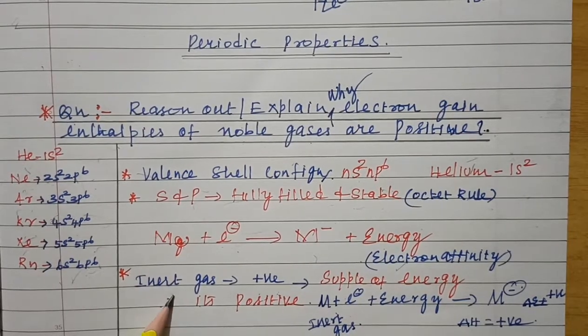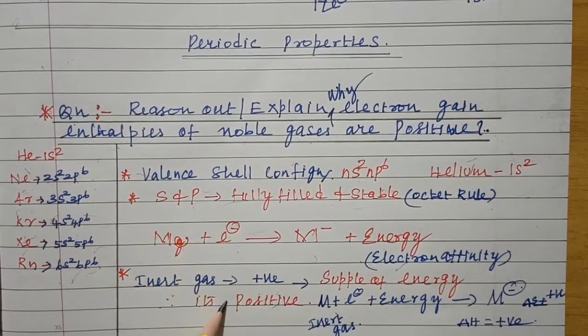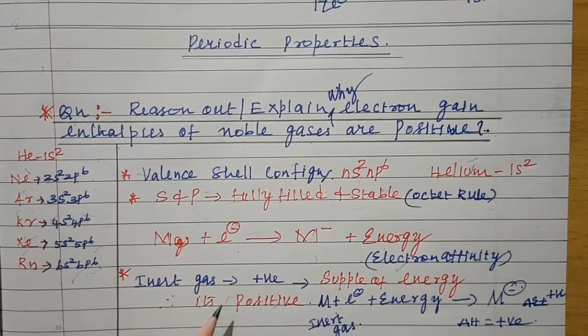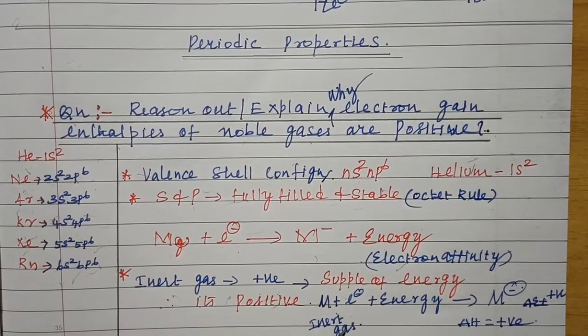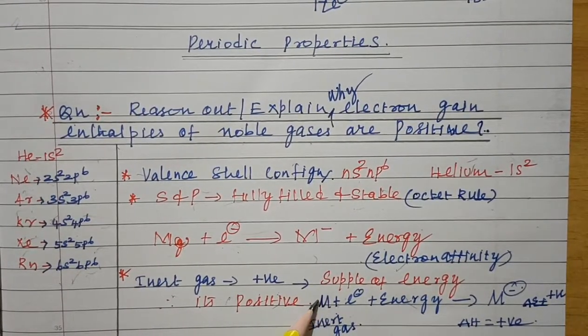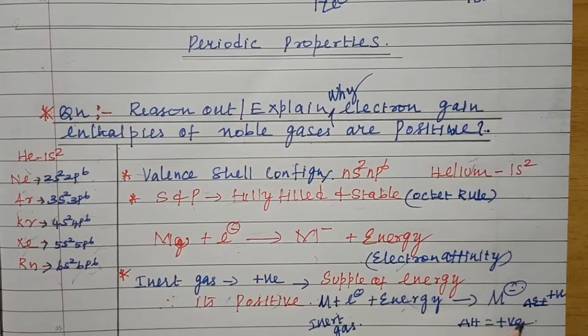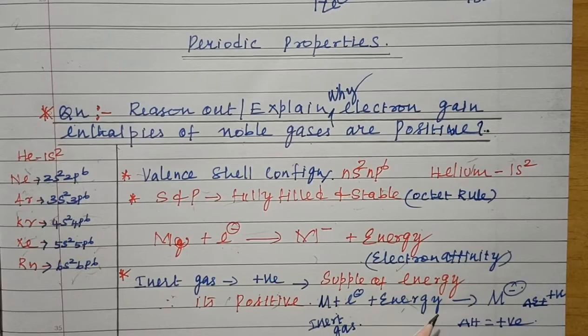As inert gases contain 8 electrons in their valence shell, they don't have the tendency to attract or accept electrons. So for the addition of electron we have to supply energy in the case of inert gases or noble gases, thereby the electron gain enthalpy of inert gases are positive.